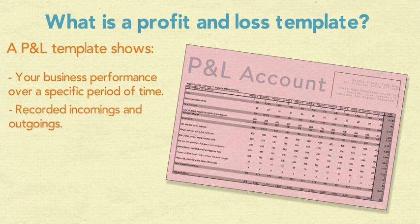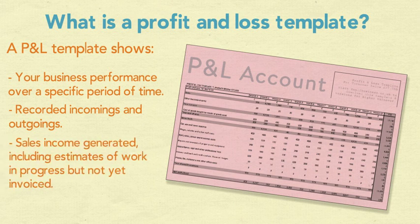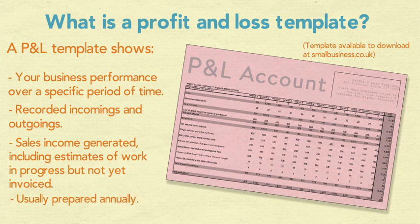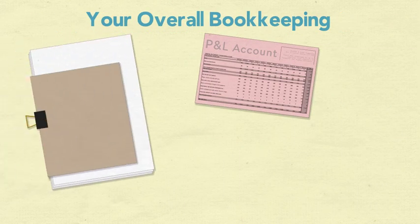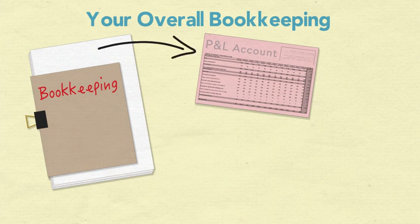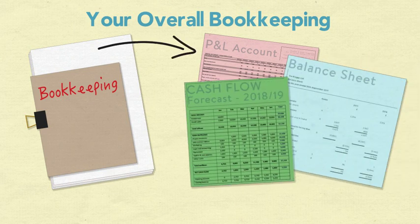A P&L template shows your business performance over a specific period of time, recording incomings and outgoings, sales income generated, including estimates of work in progress but not yet invoiced. A P&L statement is usually prepared annually and shows revenues and costs and how much profit has been made over the period. It should form part of your overall bookkeeping set of documents, along with a balance sheet and cash flow forecast.